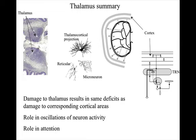Inhibitory neurons in the TRN can trigger gamma band oscillations in the thalamocortical circuit. Sensory information passes through the thalamus before reaching the cortex, and the thalamus plays a role in selecting what will be the target of attention.